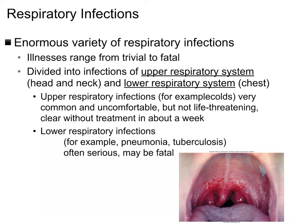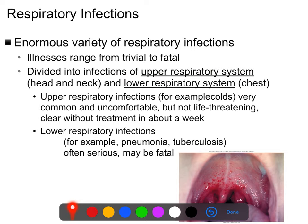Respiratory infections fall broadly into two categories based on what part of the respiratory tract they infect. The upper respiratory system consists of the nose, mouth, pharynx, and also the eyes, ears, and sinuses. It is co-terminal with the upper digestive system — the mouth is considered part of both — but with the exception of dental caries and gum disease, most infections of the mouth and nose are considered respiratory rather than digestive.